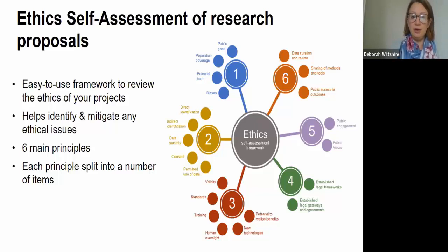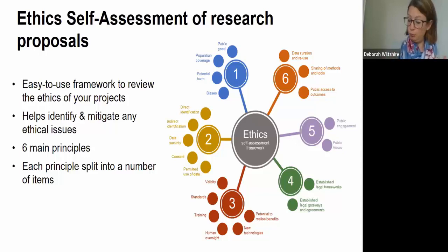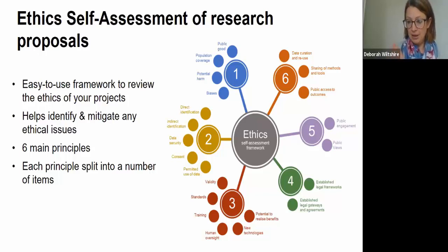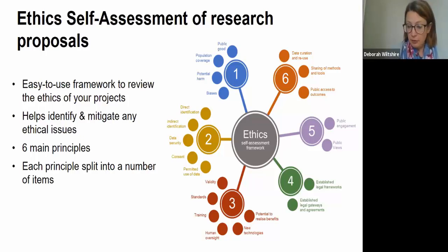The framework helps you identify and think about how to mitigate any ethical issues. There are six main principles, each split into a number of items — 22 items in total. The self-assessment form guides you through each of those 22 items and asks you to identify any potential issues. There is a lot of guidance on the UK Statistics Authority website, and the link can be shared in the chat.